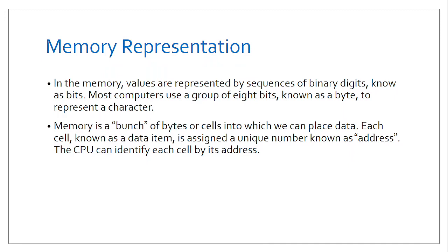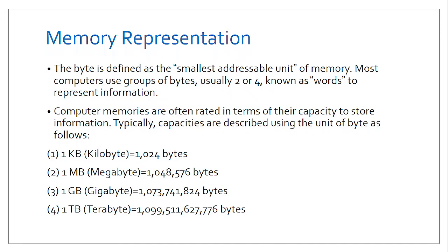From a byte, we go to kilobytes: 1,000 bytes make 1 kilobyte. This memory representation is very crucial and informs the capacity or storage capacity of a given storage device. From there, 1,000,000 bytes make 1 megabyte, and we can go on until we reach terabytes.